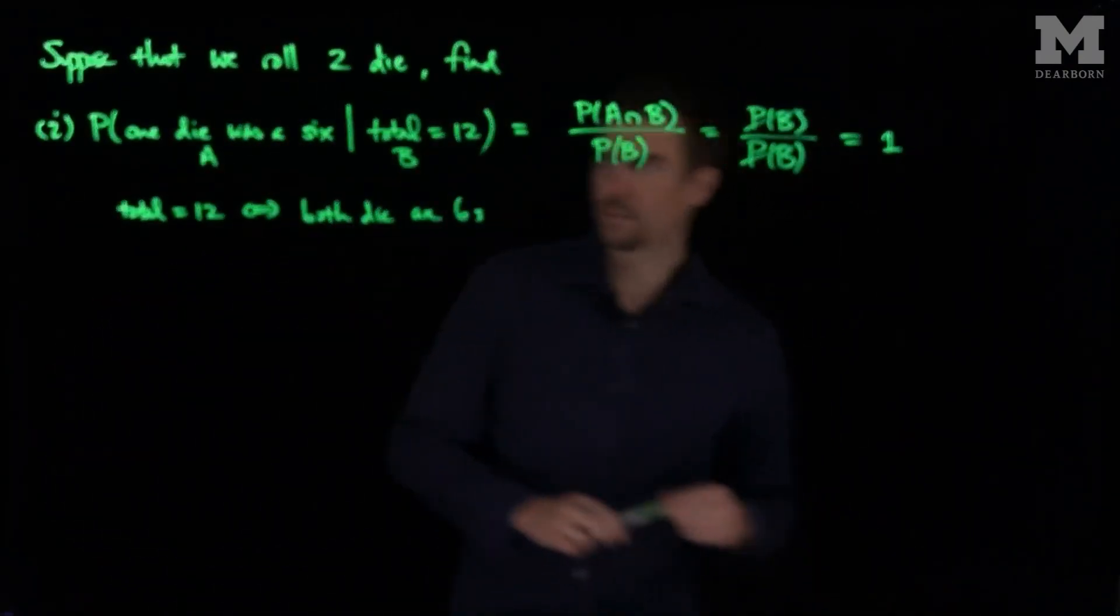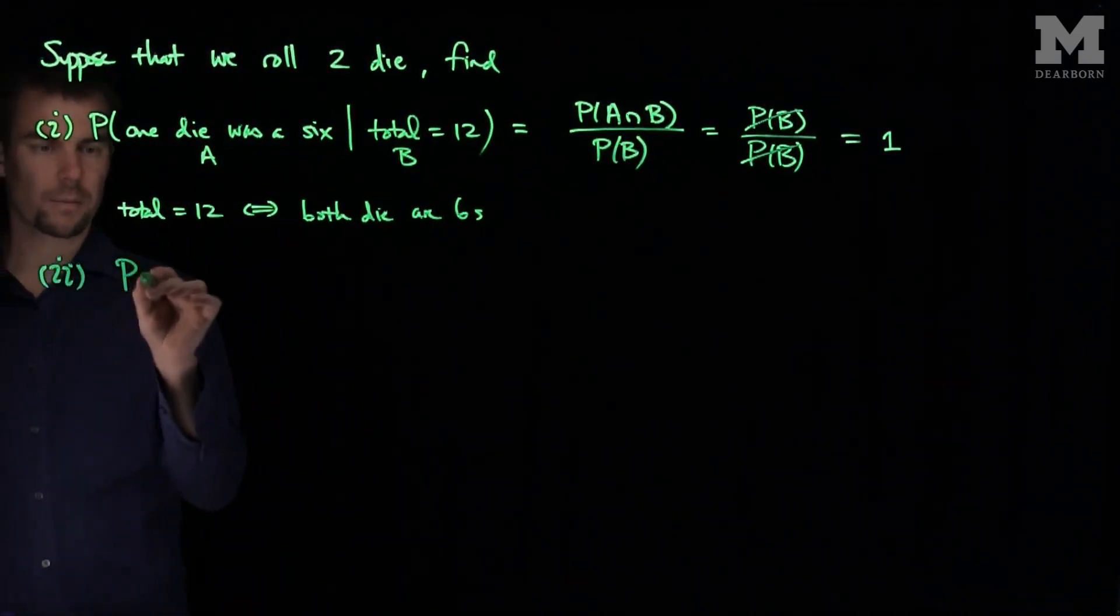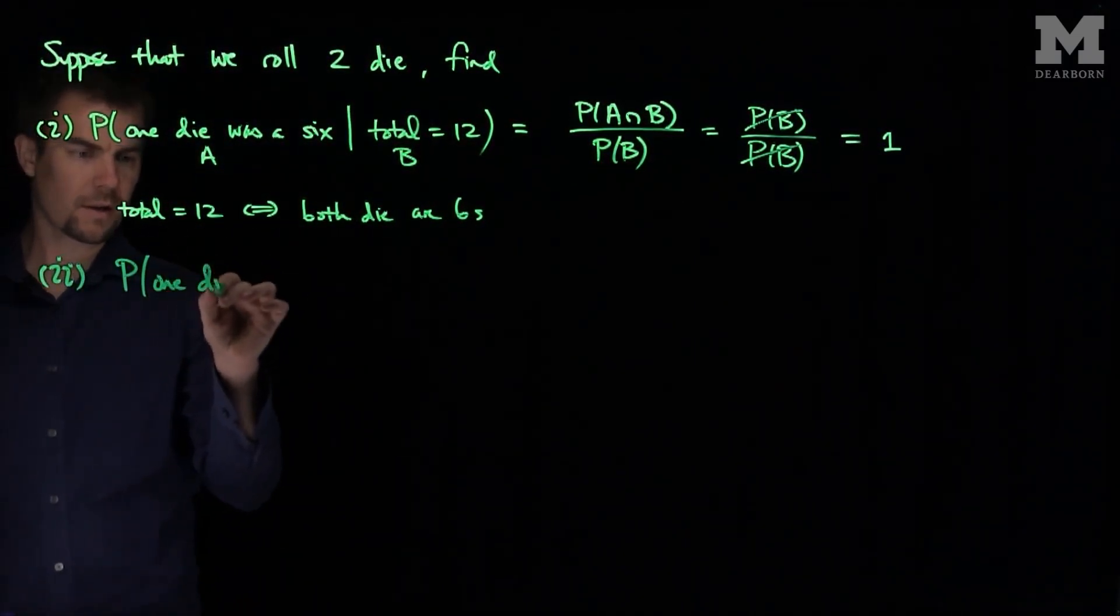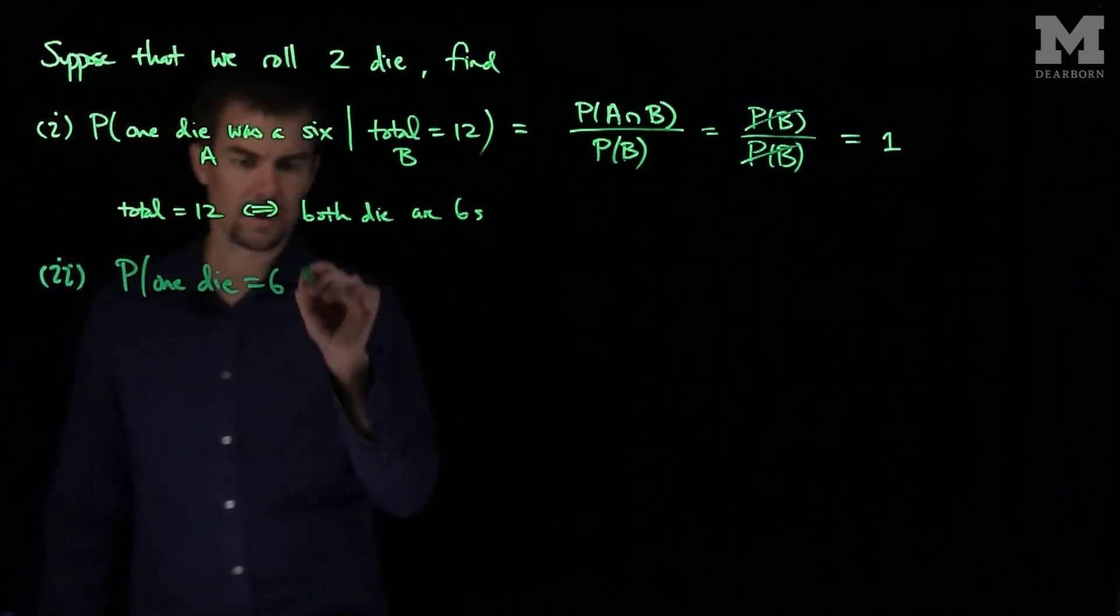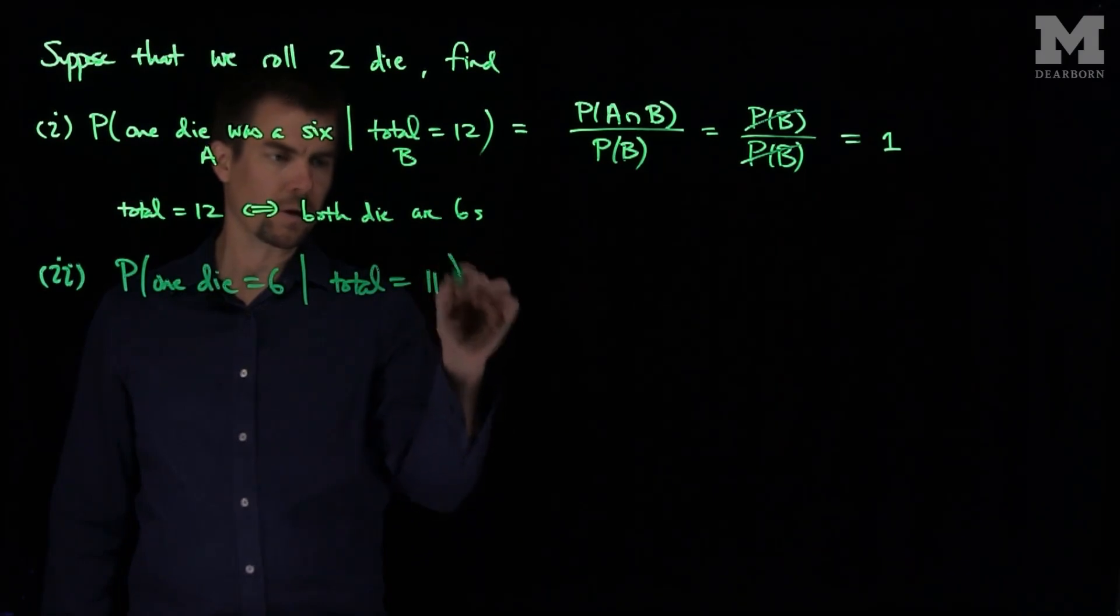Let's see another example. Let's do part 2. Let's find the probability that 1 die is a 6 given that the total is equal to 11.